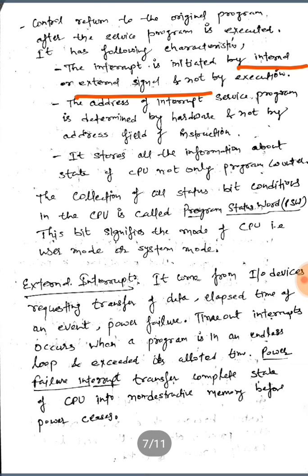The program interrupt stores all information about the state of the CPU, not only the program counter. The collection of all status bit conditions in the CPU is called the Program Status Word (PSW). This signifies the mode of the CPU — either user mode or system mode.